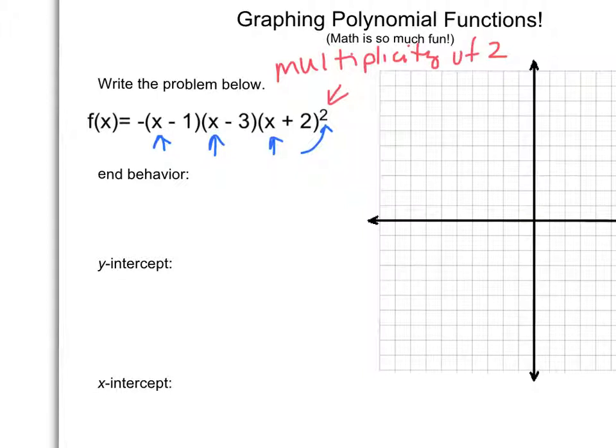So what's my lead coefficient? It's going to be a negative. So what we actually have here is our leading coefficient term is we have a negative x to the 4th. So the fact that it's negative means you're going down, and the 4th means in the same direction. So down and down, that's going to be our end behavior.